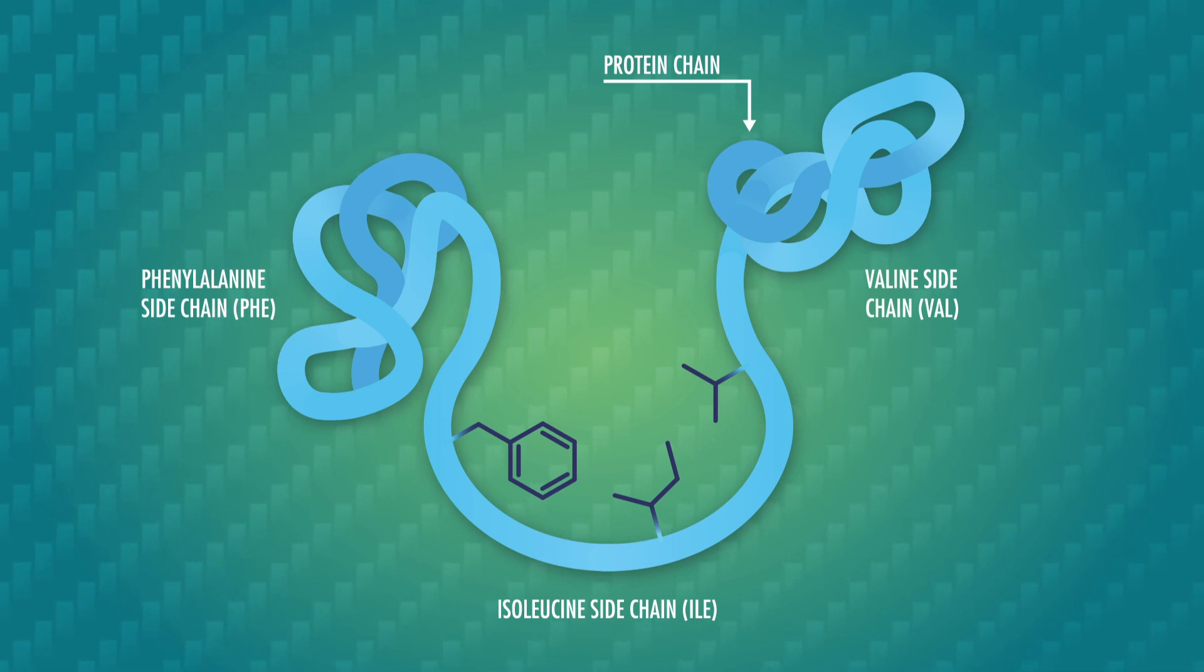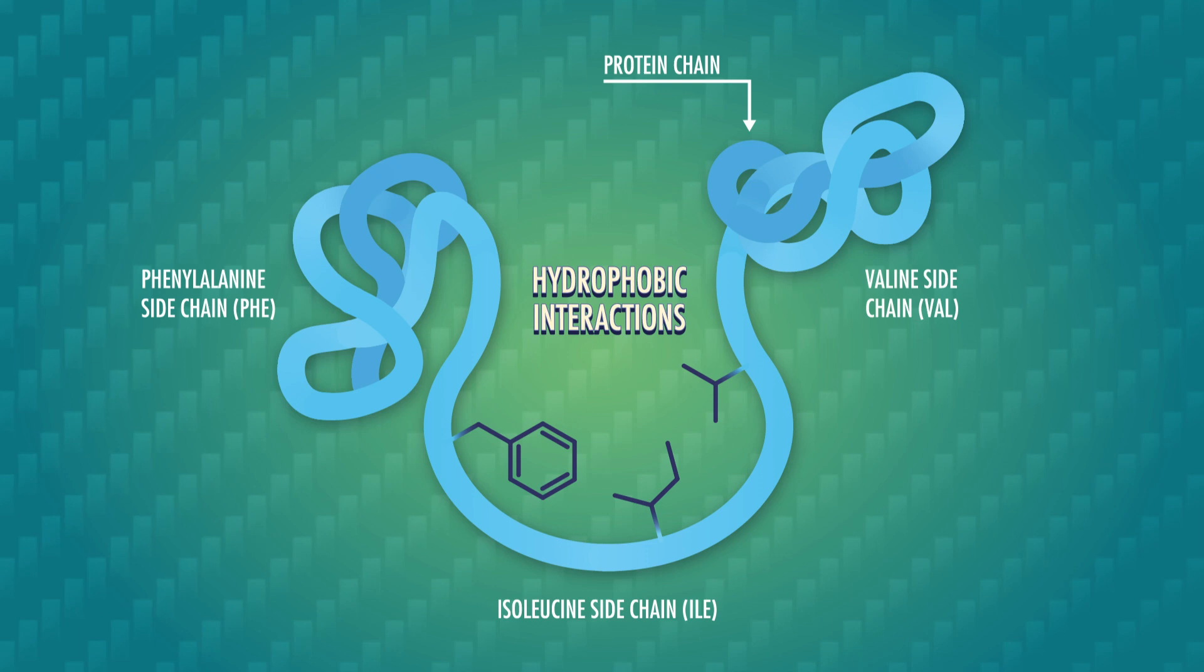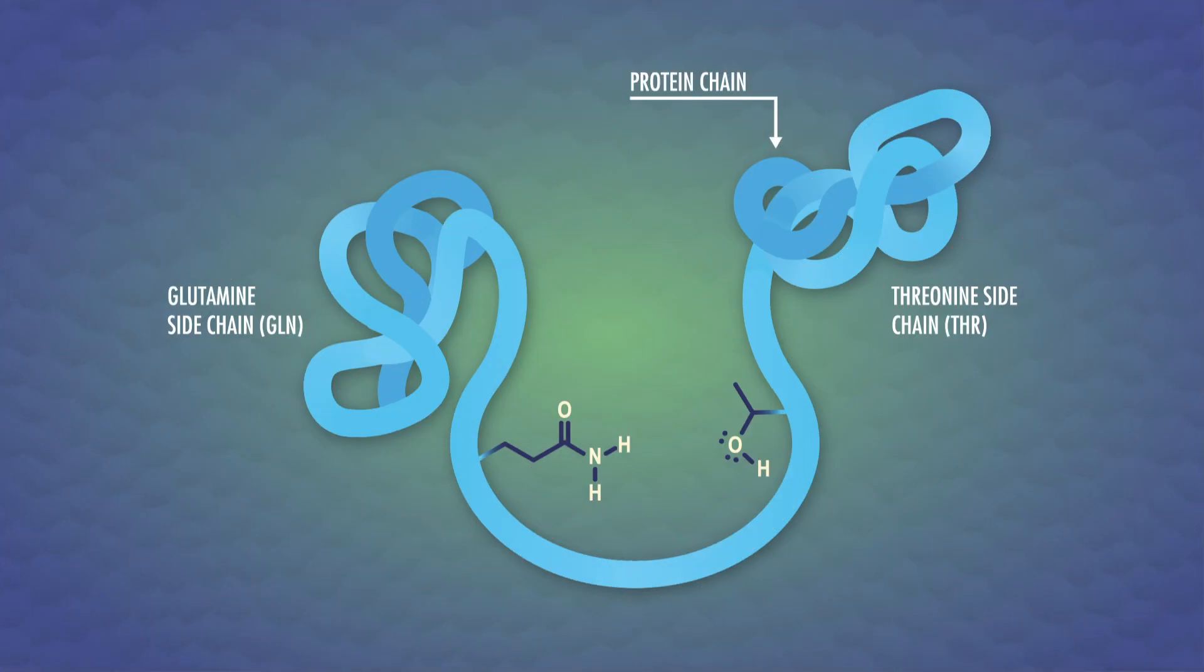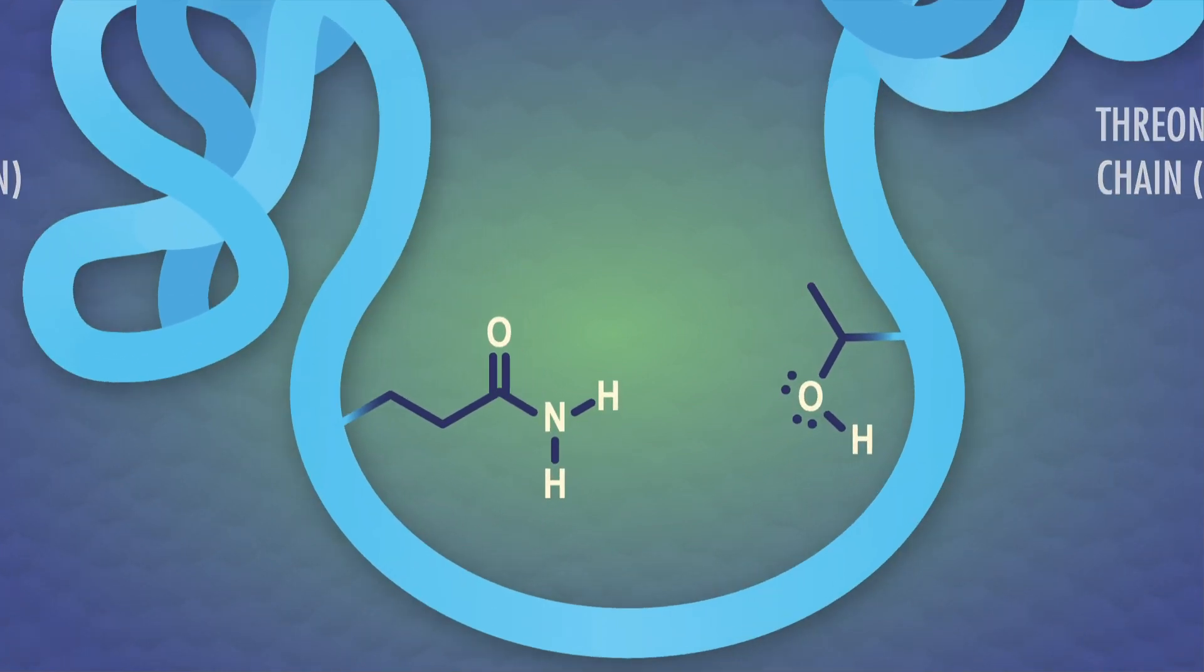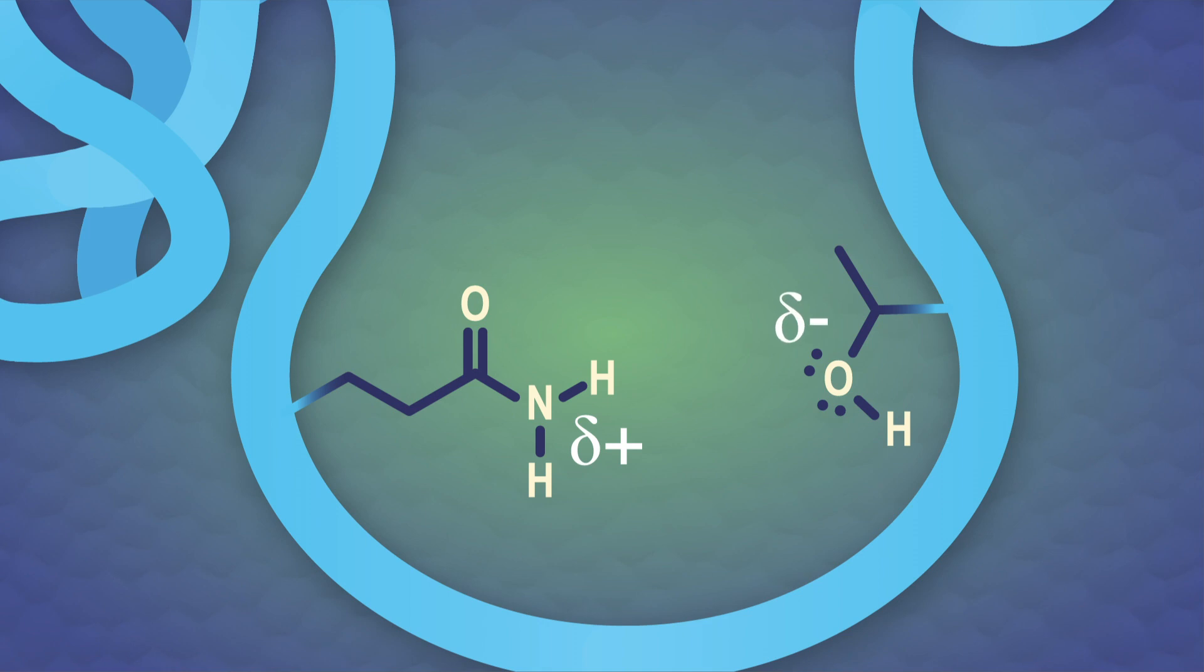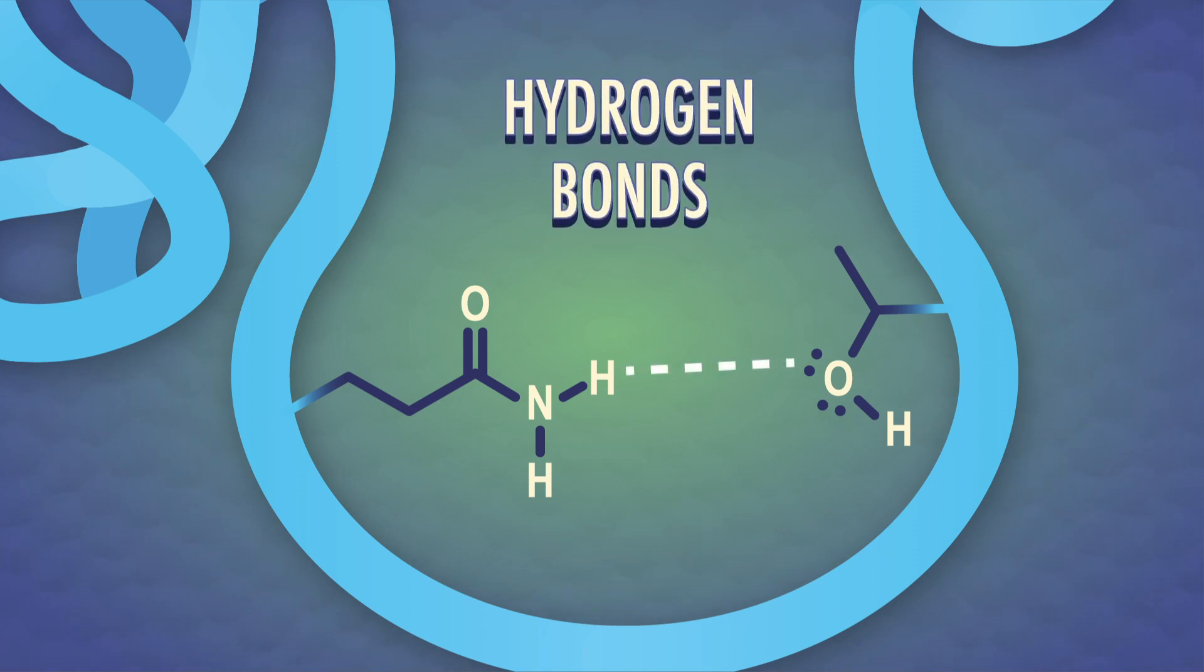Next is hydrogen bonding, but remember, we're talking about between the side chains instead of the backbone this time. Polar amino acids have side chains with partial positive and partial negative charges that can form hydrogen bonds. And polar amino acids with side chains near the protein surface can hydrogen bond with water.